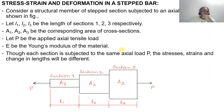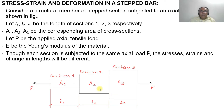In this video we will discuss stress, strain, and deformation in a stepped bar. The stepped bar shown has section 1, section 2, and section 3, with cross-sectional areas A1, A2, and A3, and lengths L1, L2, and L3, subjected to a tensile load P acting in opposite directions. Consider a structural member of stepped section subjected to an axial pull of P.